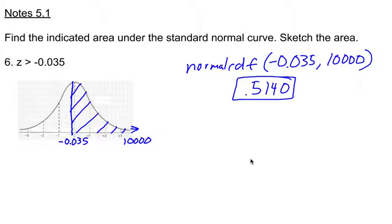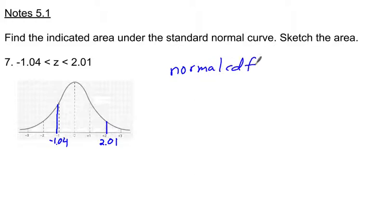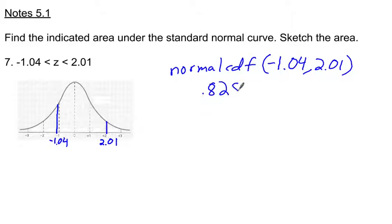For the last example, we find the area between z = negative 1.04 and z = 2.01. We use normalCDF(negative 1.04, 2.01), and this comes out to 0.8286.